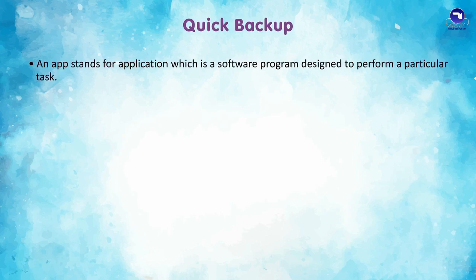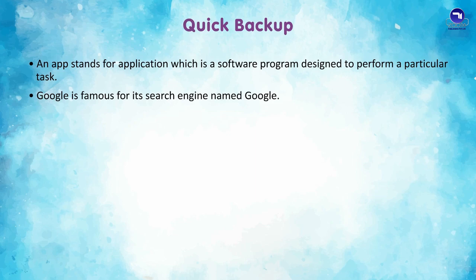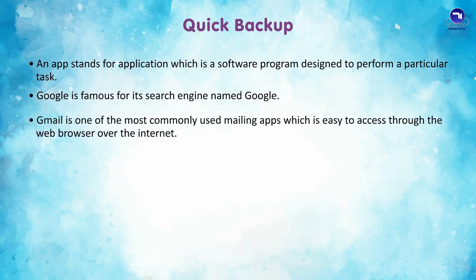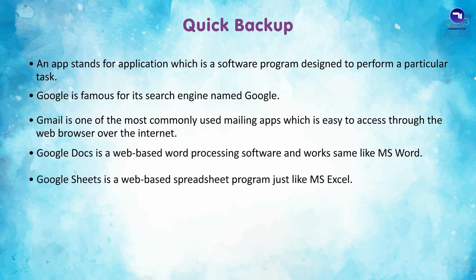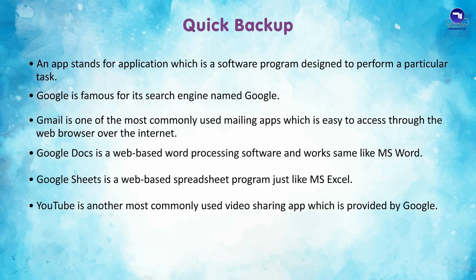Quick Backup — key points: An app stands for application, which is a software program designed to perform a particular task. Google is famous for its search engine. Gmail is one of the most commonly used mailing apps, accessible through a web browser. Google Docs is a web-based word processing software like MS Word. Google Sheets is a web-based spreadsheet program like MS Excel. YouTube is the most commonly used video sharing app provided by Google.